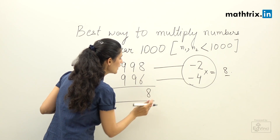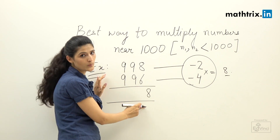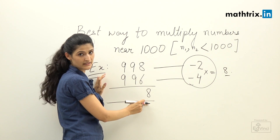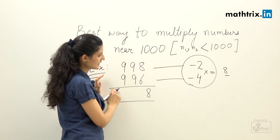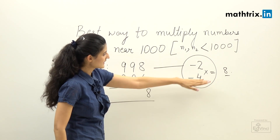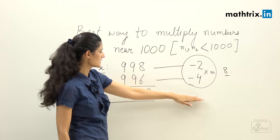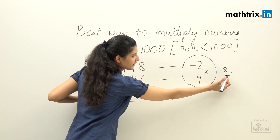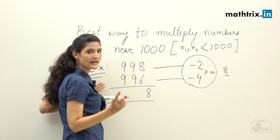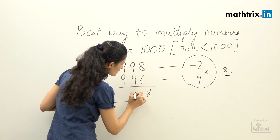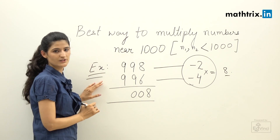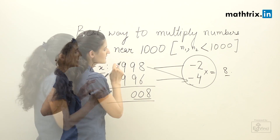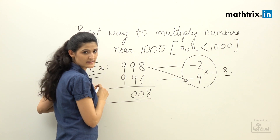Step number two: we will multiply the differences. When we multiply minus two and minus four, we get 8. Remember that whenever we are calculating numbers near thousand, this multiplication should always give us the last three digits of our answer. Since we got 8, which is one digit, we add two zeros, making the last three digits 008.